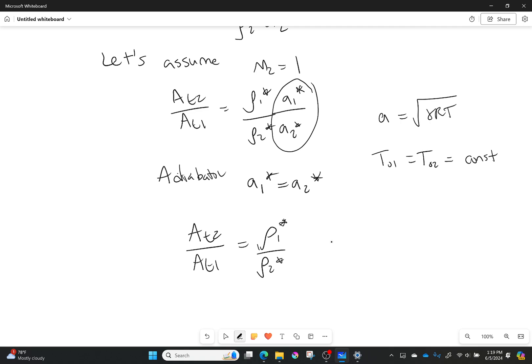That tells me my area throat 2 over my area throat 1 is going to be equal to density 1 star over density 2 star. I can also tell from ideal gas law that this would be equal to P1 star over P2 star.